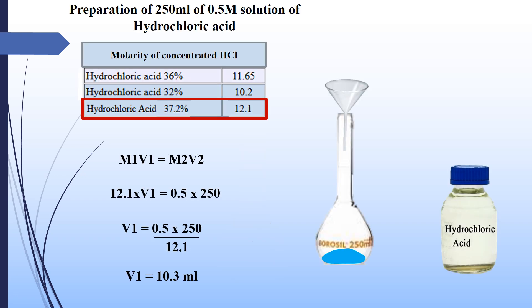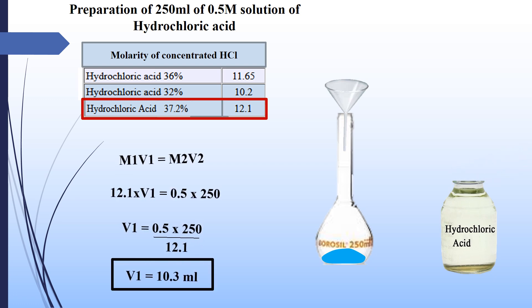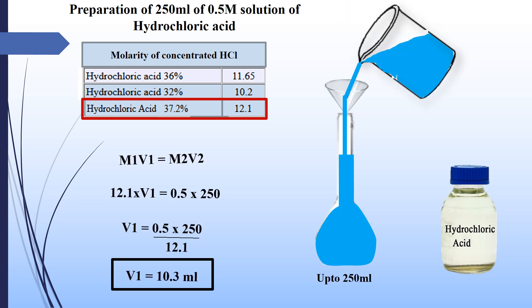To prepare 250 milliliters of 0.5 molar solution of hydrochloric acid: M1 will be the same as in the previous calculations. V1 is to be found out. M2 will be 0.5, as we want to prepare a 0.5 molar solution. Put 250 in V2, as we want to prepare 250 milliliters of solution. Take 10.3 milliliters of concentrated hydrochloric acid with a pipette into a 250 milliliter flask having a little water in it, and dilute the solution up to the mark. This will be 250 milliliters of 0.5 molar solution of hydrochloric acid.